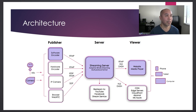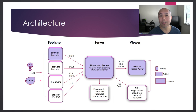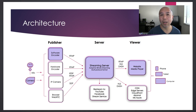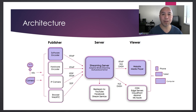Let's talk about software encoders first. A software encoder runs on a PC or desktop — whether it's a Mac, Linux, or Windows machine. You need some kind of capture device to capture your video and audio, whether it's a capture card or an external device. You then have a software encoder running on that desktop that captures the audio and video sources.